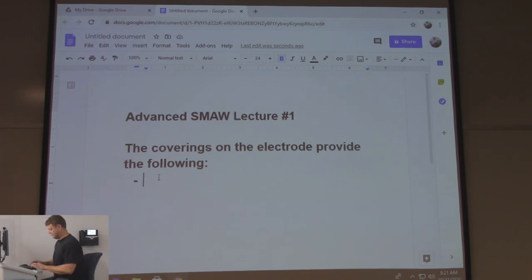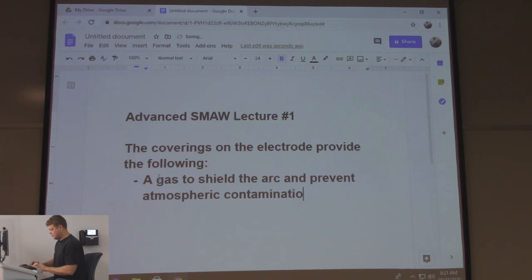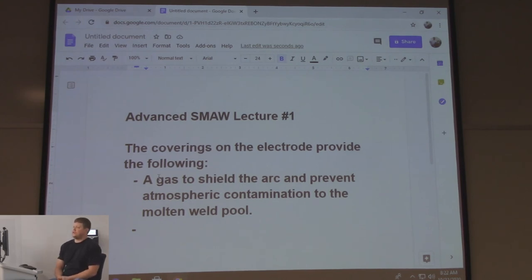First thing is a gas to shield the arc and prevent atmospheric contamination to the molten weld pool. Everybody knows that with welding, if you have liquid metal, gases from the air get into it and upon solidification they try to escape, causing porosity. That's why you've got to have some kind of shielding for all the welding processes where it goes into a liquid state. There are solid state welding processes where it's not as important, but you have to have shielding to keep the gases from getting into your actual weld.